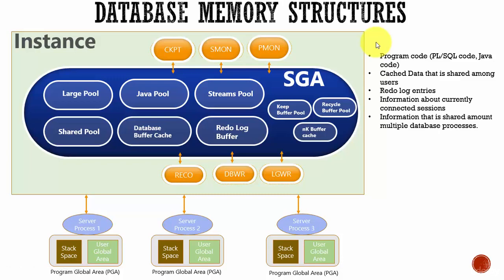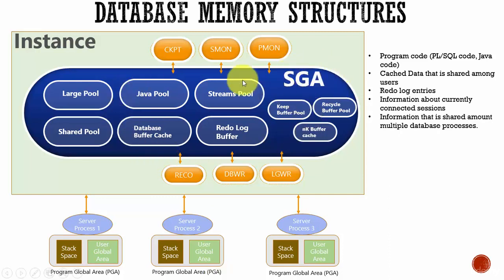In this session, let's learn about the database memory architecture. Oracle Database creates various memory structures for various purposes. There are two basic memory structures: the SGA, which refers to the Shared Global Area, and the PGA, which refers to the Program Global Area. The Shared Global Area is a set of memory structures used to store your data and the control information related to an Oracle instance.